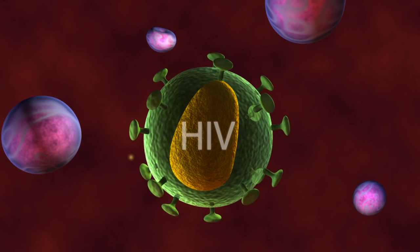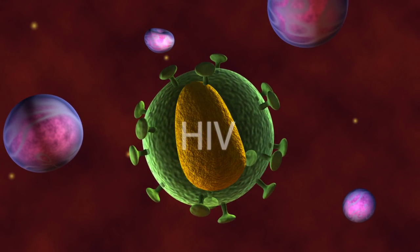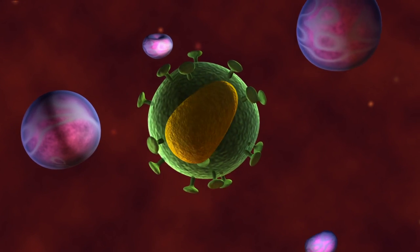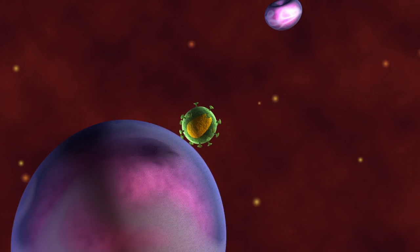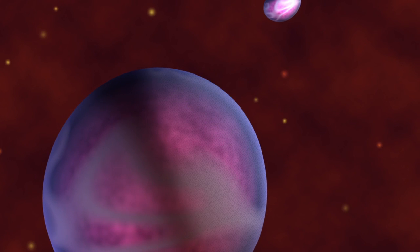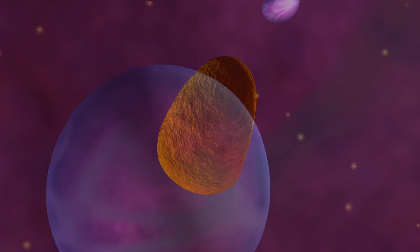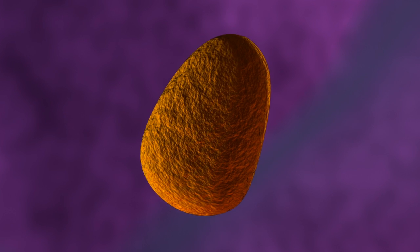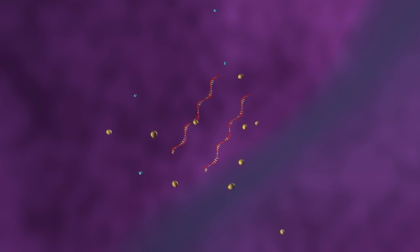The human immunodeficiency virus or HIV is the pathogen that causes AIDS. HIV requires the machinery in white blood cells to reproduce itself so it must fuse and penetrate cell membranes. Once inside, HIV unpackages its two copies of RNA genetic material that will code for viral proteins.